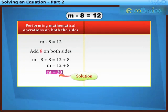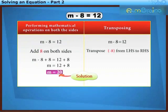Now let us solve the equation m minus 8 is equal to 12 by transposing. Transpose minus 8 from LHS to RHS. Here we get m is equal to 12 plus 8.